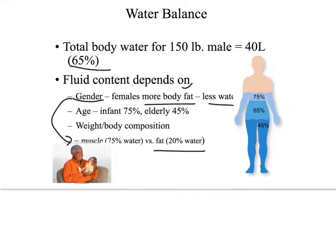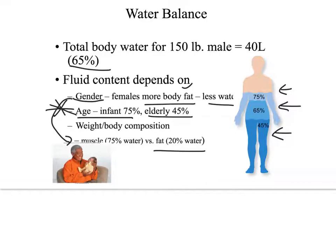In humans, water percentage ranges from 45% to 75%, with the average male at about 65%. Infants have more water and the elderly have less. Both age brackets are really susceptible to dehydration — if they get diarrhea, vomiting, or aren't drinking, they're at high risk. It's all about weight and body composition.